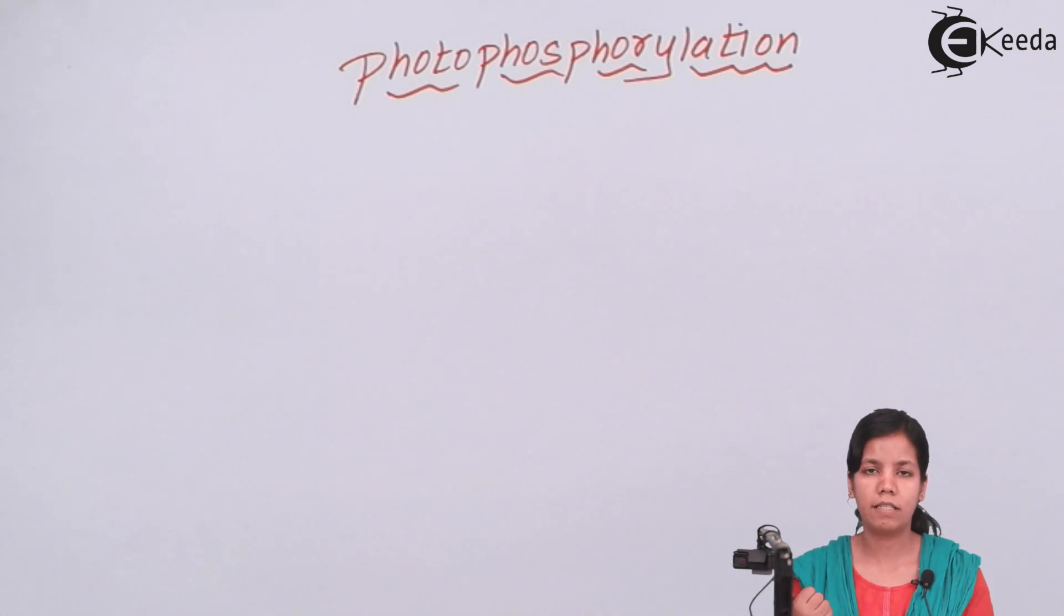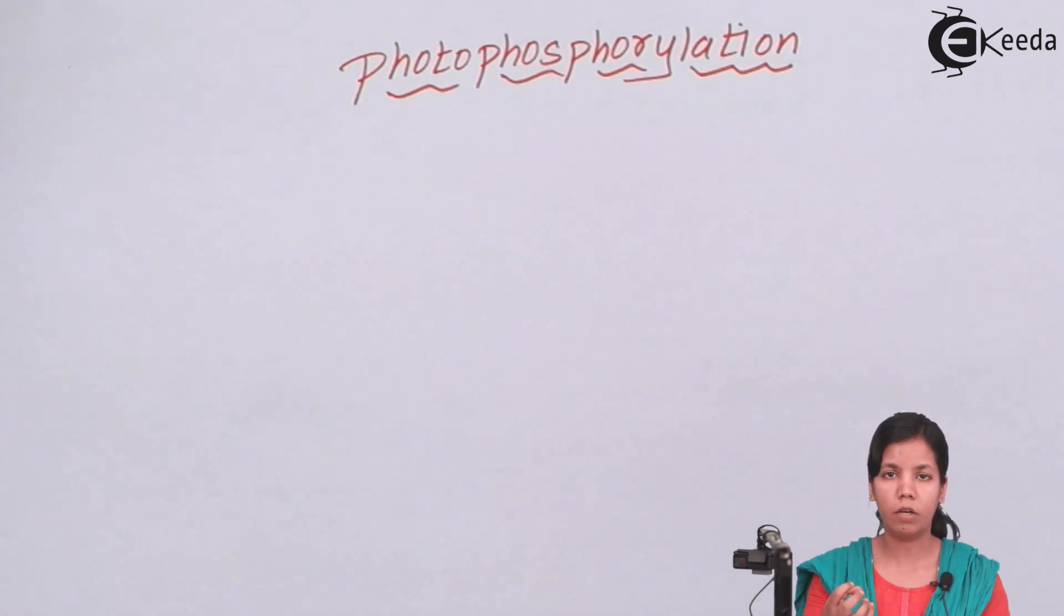For example, we are talking about photosystem 1. The reaction center of photosystem 1 was 680. So when light falls on photosystem 1, the reaction center will absorb energy which is equivalent to 680. Once it has absorbed the energy equivalent to 680 in the form of photons, electrons get excited.